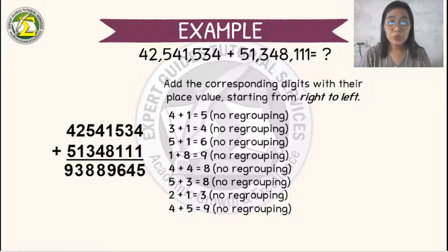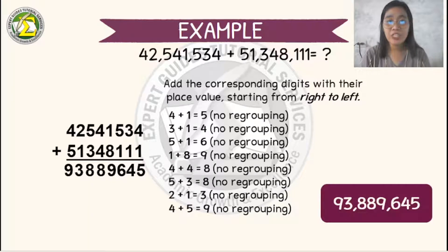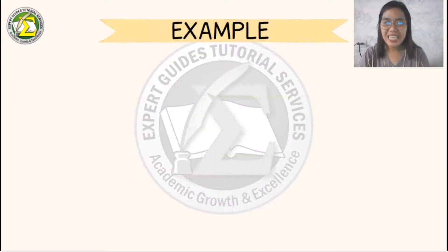So therefore, the total or the sum of these 2 addends will become 93,889,645.